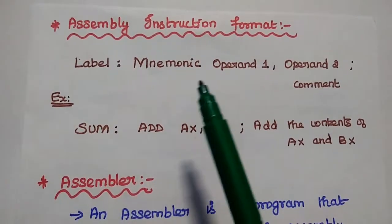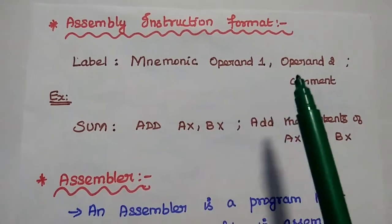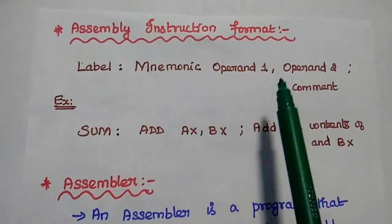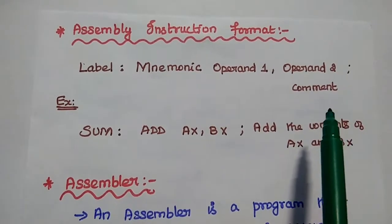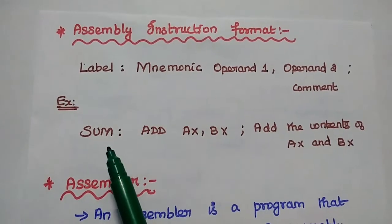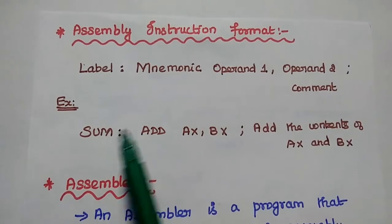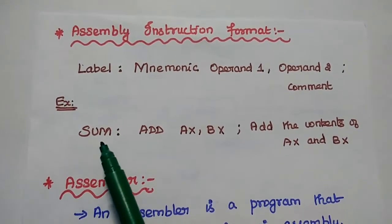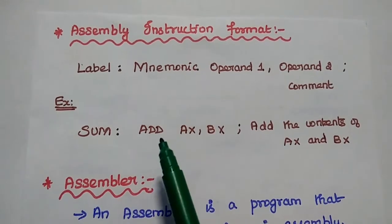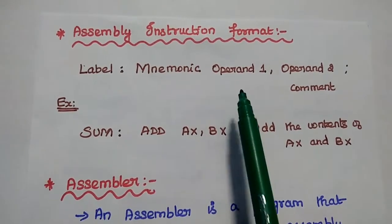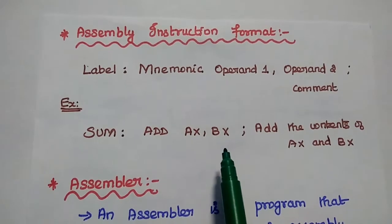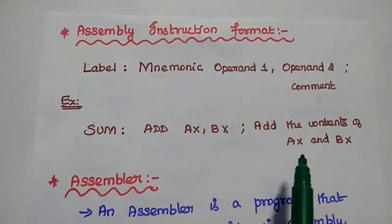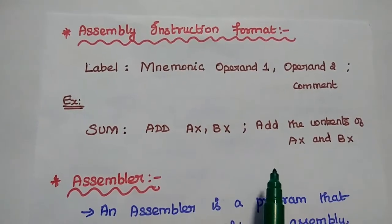Let's start with the assembly language instruction format: label, colon, mnemonic, operand 1, operand 2, comment. Here, the label can be any name which is relevant to the program. For example, the mnemonic is ADD, operand 1 is AX, operand 2 is BX. The comment is: to add the contents of AX and BX registers.